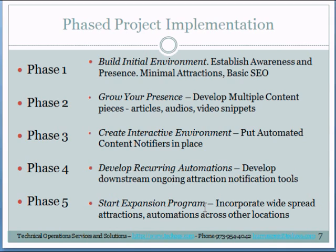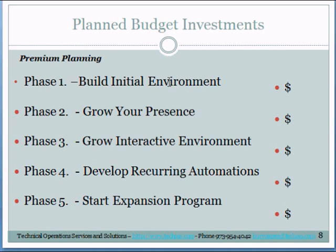Then, depending on what you did in steps one through four, we start expanding the program. We go wider and wider — more automations, more attractions in phase five. So there's an initial build investment, then we grow it, then we grow the interactive environment, then we develop many recurring automations, and then we start the expansion program. We develop each one of these based on your budget. We have some ballparks we'll gladly talk to you about, but it really is about how you can grow and what makes it work for you.